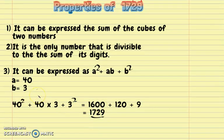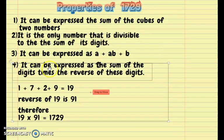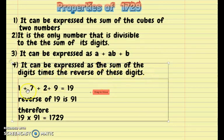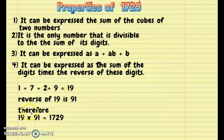The fourth property is that it can be expressed as the sum of the digits times the reverse of these digits. 1 + 7 + 2 + 9 = 19, and the reverse of 19 is 91. Therefore, if we multiply 19 × 91, it gives us 1729.